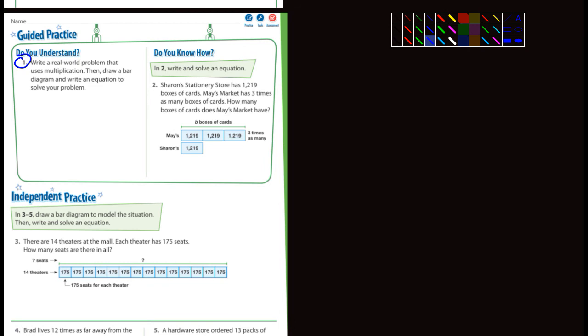Number two here, Sharon's Stationery Store has 1,219 boxes of cards. May's Market has three times as many. How many boxes does she have? Well, B represents the number of boxes and you can see that they did May's three times as many and Sharon's is just one box. So what do we need to do here? Just simply 1,219 times three. I think you guys could do that.